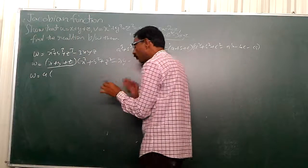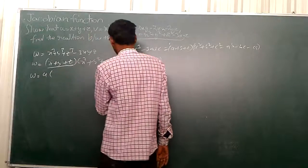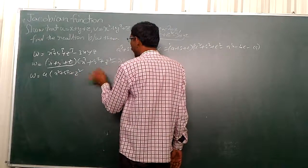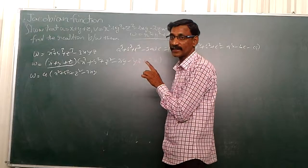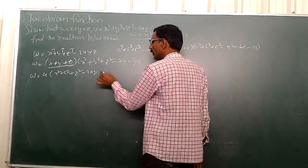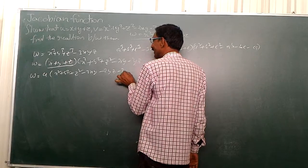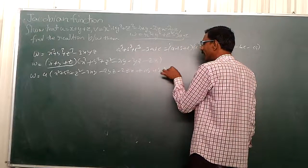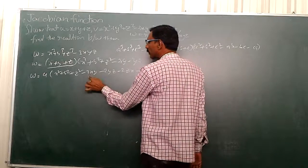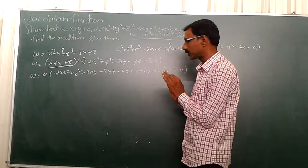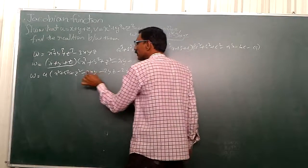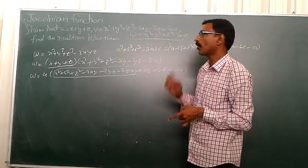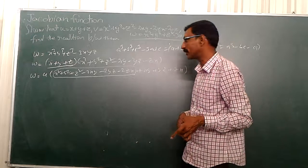Now write down w is equal to u into this part. I would like to write x square plus y square plus z square minus 2xy minus 2yz minus 2zx, but here I have only minus xy. So I would like to subtract xy plus yz plus zx. See this part is equal to v: x square plus y square plus z square minus 2xy minus 2yz minus 2zx.